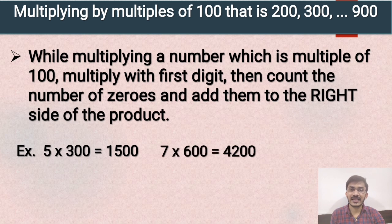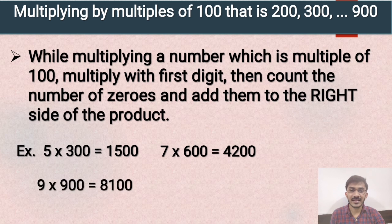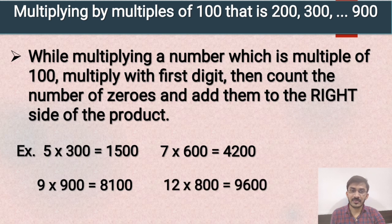Next example: 7 multiplied by 600 — 7 sixes are 42, and we add two zeros at the end. Next example: 9 multiplied by 900 — 9 nines are 81, and we add two zeros. So the answer will be 8100. Last example: 12 multiplied by 800 — 12 eights are 96, and we add two zeros at the end. So the answer will be 9600.